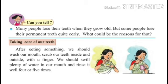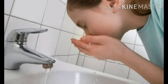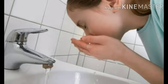Tooth decay could be the reason for losing permanent teeth early. Now students, we will see how we will take care of our teeth. After eating something, we should wash our mouth, scrub our teeth inside and outside with a finger. We should swill plenty of water in our mouth and rinse it well 4 or 5 times.